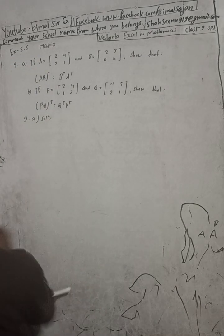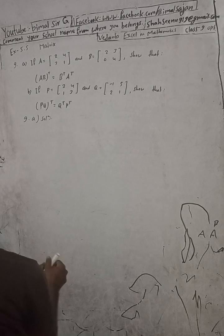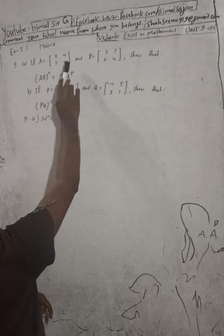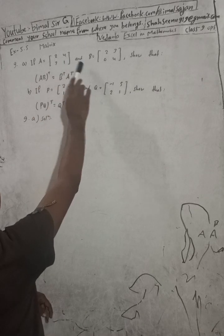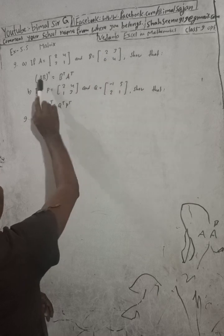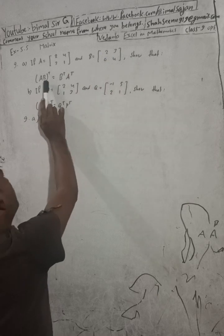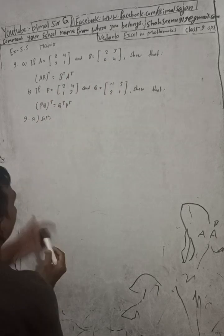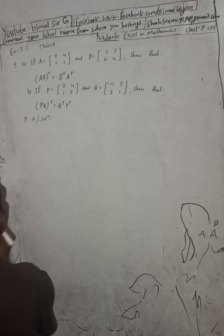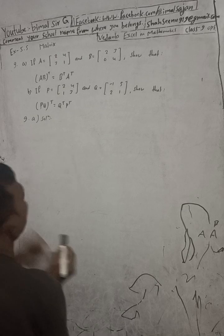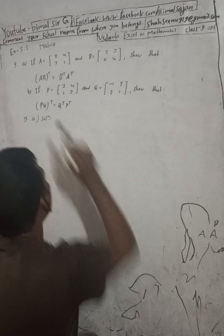Now let's begin this solution. Here, question 9a: if A is equal to [2,4; 3,1] and B is equal to [3,0; 4, ...], show that (AB) whole transpose is equal to B transpose into A transpose. We need to prove this.